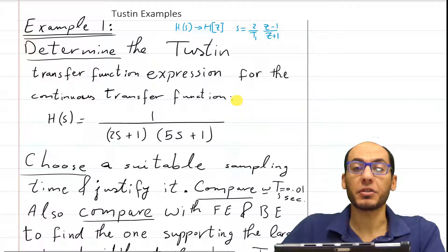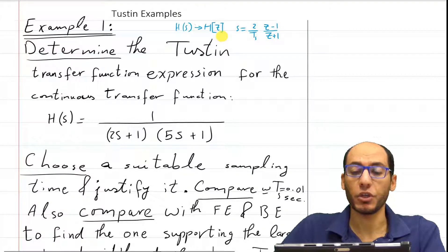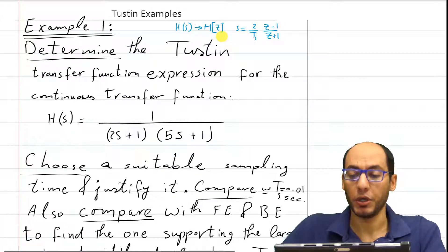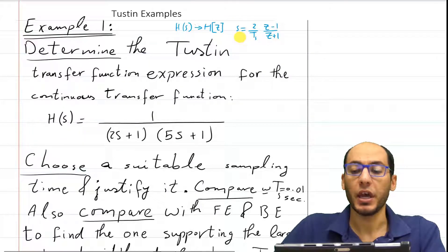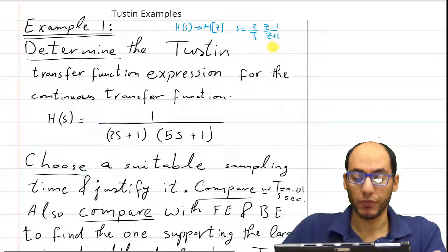What is the Tustin discretization model? The Tustin is just a way to convert a continuous time transfer function to a discrete time transfer function using a specific discretization or approximation model. You just replace S with 2 over the sampling time, multiplied by Z minus 1 over Z plus 1.